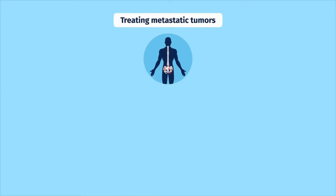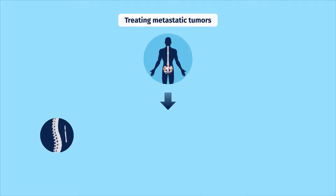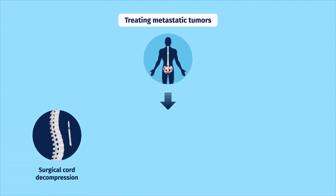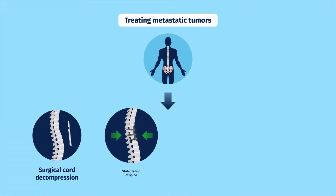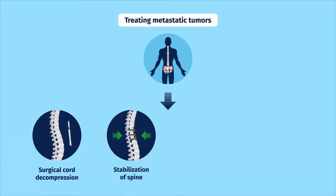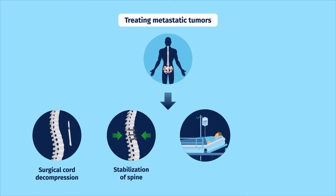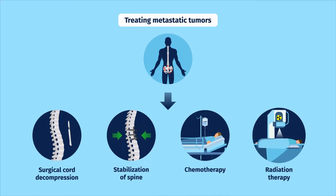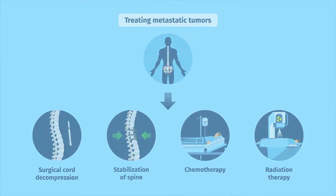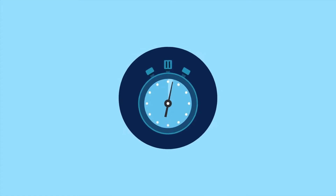Contrarily, metastatic tumors may need to be treated with surgical decompression of the spinal cord and/or stabilization of the spine, with adjuvant treatments like chemotherapy and radiation. The timing of surgery is also critical.